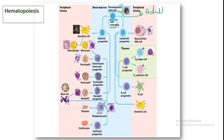There are two types of stem cells: embryonic stem cells and adult stem cells. Embryonic stem cells can become any type of cell in the whole body — brain cells, liver cells, nerve cells, blood cells. Hematopoietic stem cells, however, have a commitment to become only blood cells, which is why they are classified as adult stem cells.